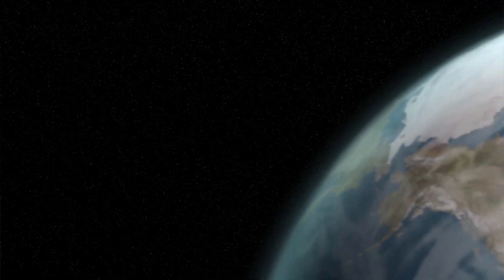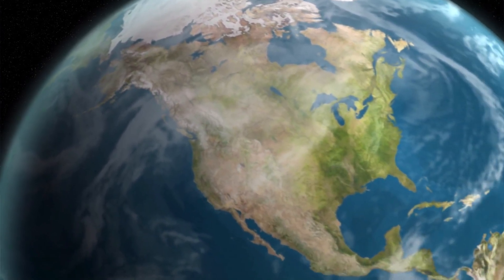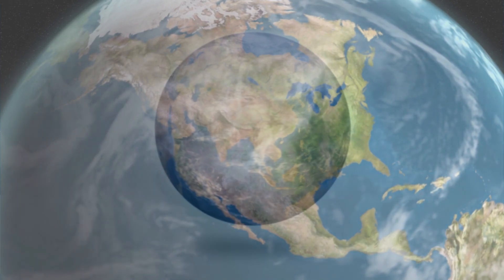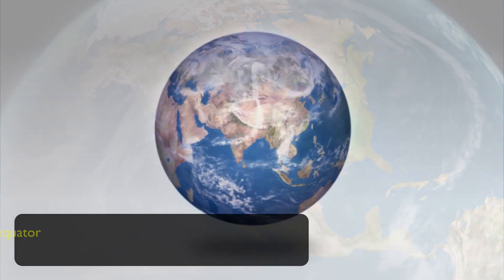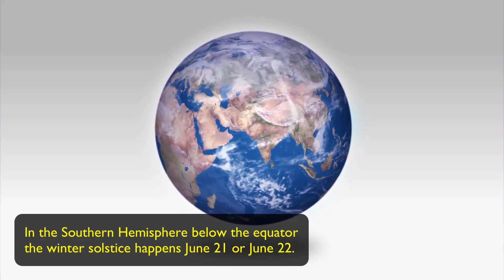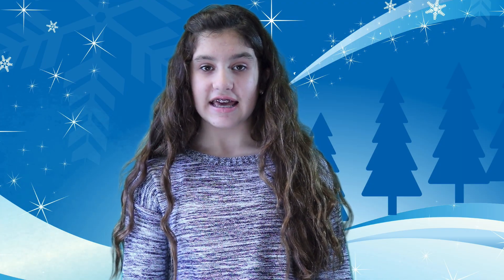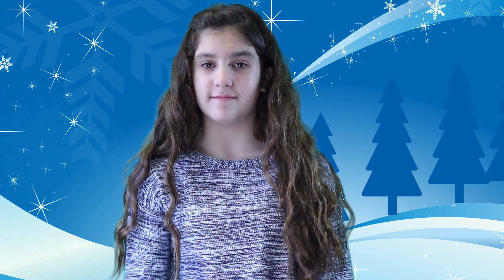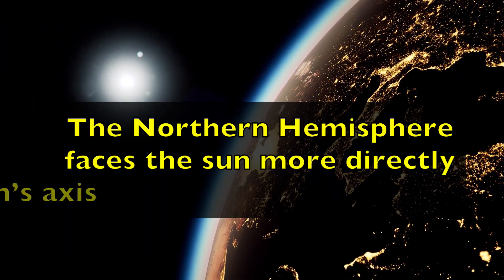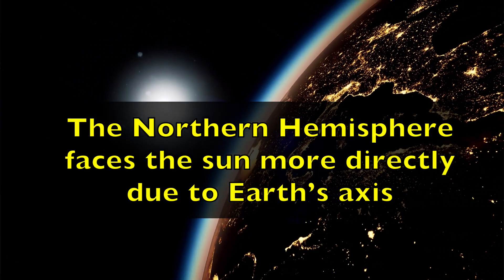Winter is what starts the winter solstice. In the northern hemisphere, the winter solstice usually happens on December 21st or December 22nd. And in the southern hemisphere, which means it's below the equator, the winter solstice happens on June 21st or June 22nd. This happens because the southern hemisphere is tilted away from the sun, and the northern hemisphere faces the sun more directly due to the earth's axis.